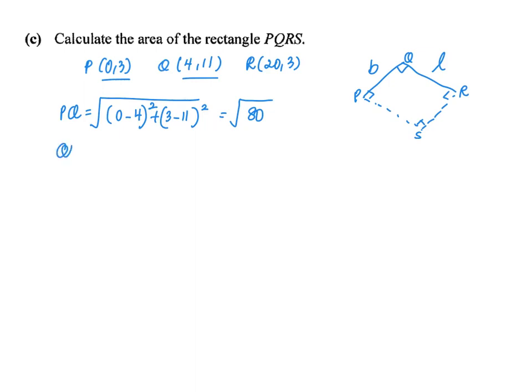And then let's find the value, the length for QR. Length for QR will be also something like the Pythagoras theorem, something square plus something square. So in this case, I'll get (4 minus 20) squared, (11 minus 3) squared, square root of, let's try to keep it as a nice number, 320.